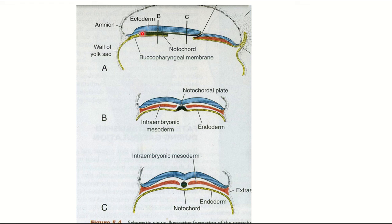To summarize the structure: the epiblast is tightly bound with the hypoblast at the buccopharyngeal membrane, and also at the cloacal membrane, but in between these regions the epiblast is loosely bound with the hypoblast. The notochord is situated in between the ectoderm and endoderm.